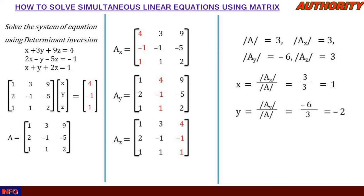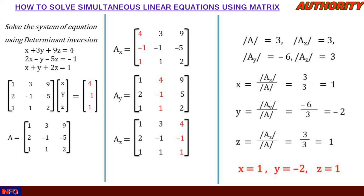To find z: det(Az) / det(A) = 3/3 = 1, so z = 1. We have solved the system: x = 1, y = -2, z = 1. That concludes the determinant method. Let's now take the second method called matrix inversion.